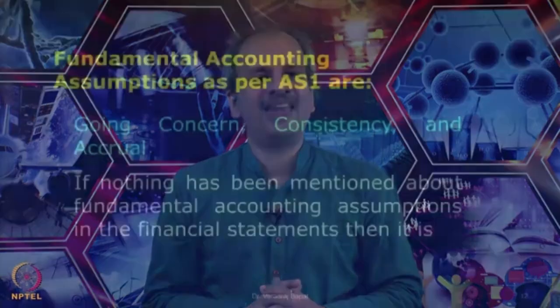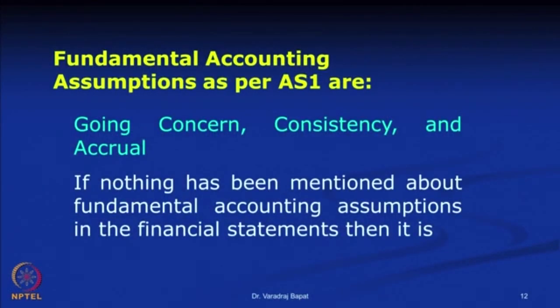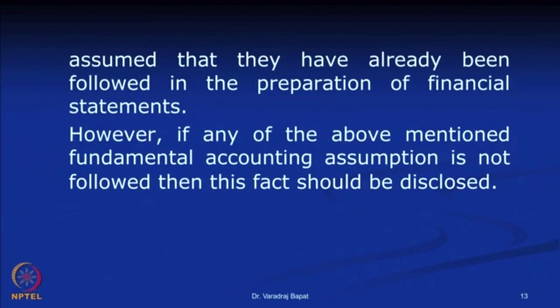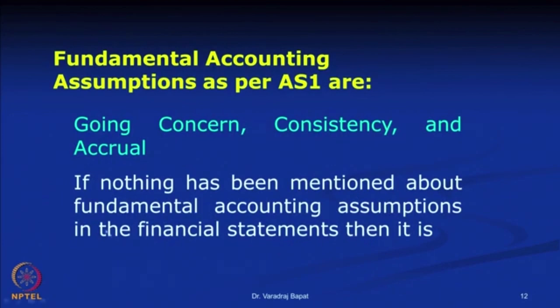As per AS 1 — Accounting Standard 1 — there are three assumptions considered as fundamental accounting assumptions: going concern, consistency, and accrual. It is always assumed that any accounting statements prepared are based on these three assumptions, which is why they are called fundamental accounting assumptions. If any of these assumptions is not followed, it must be disclosed; but normally there is no need to disclose them as it is assumed they are always followed.